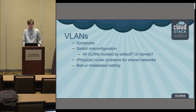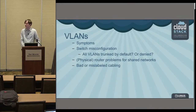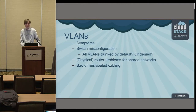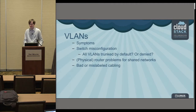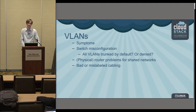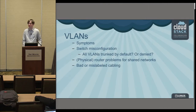So network troubleshooting. Probably the most common problem I see is VLAN problems. The symptoms range from VMs can't get DHCP, or VMs can't ping each other, or maybe they can ping each other when they're on the same host but they can't ping each other when they're on different hosts. These are all indicative of VLAN problems.